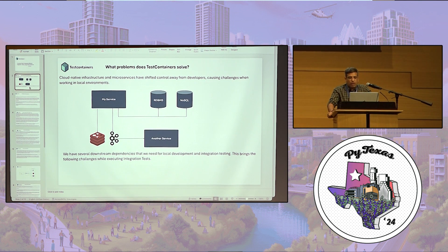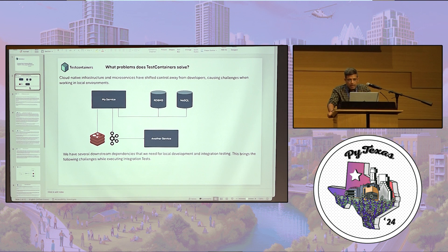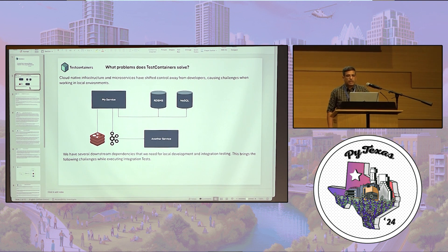The first problem of running the infrastructure locally can still be solved using Docker Compose — that problem is solvable. But when we write integration test cases with this kind of architecture, it is a little bit difficult to achieve.